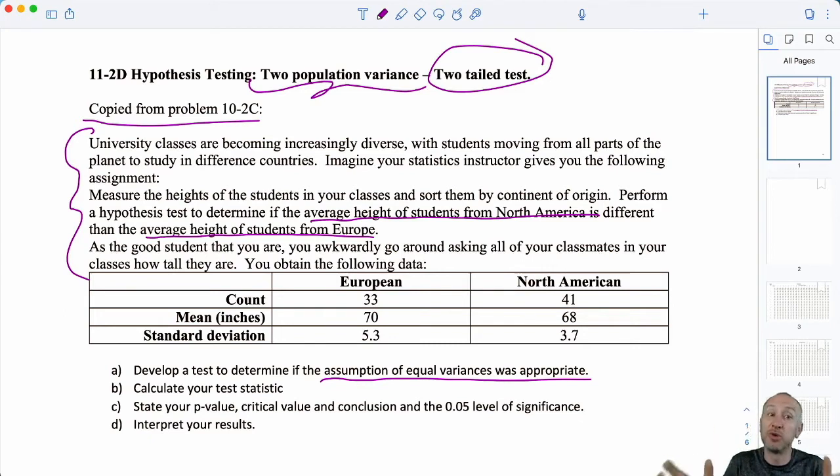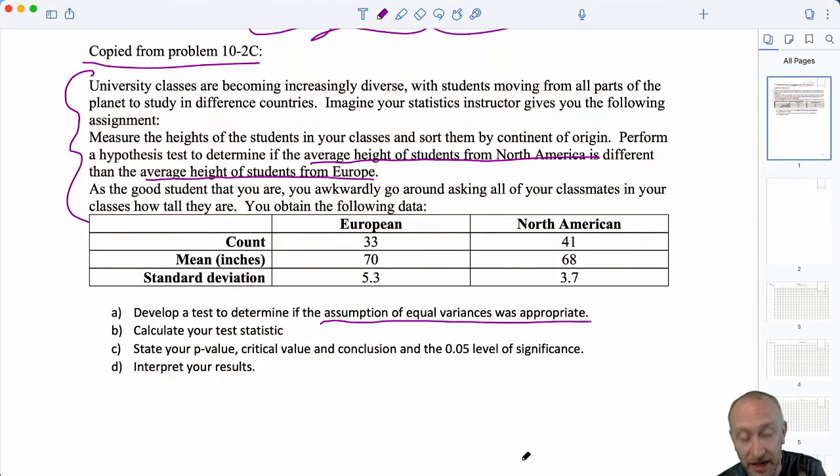So here now we've got the tools. In module 10 we didn't yet have the tools to do that so we really were just making an assumption. Now we can actually perform a test to determine which approach should we have used. So we're going to perform a test to see if they are equal. So that makes formulating our test relatively straightforward. Here I have my variances. This is a two-tail test.